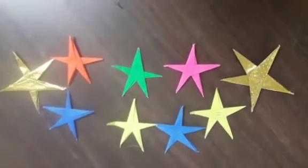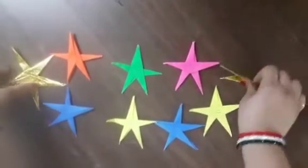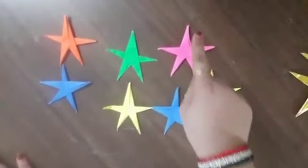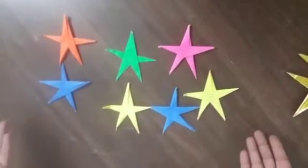Now I want to take away 2 stars. 1 and 2. Now children, how many stars are left here? Let's count. 1, 2, 3, 4, 5, 6, 7. 7 stars are left.